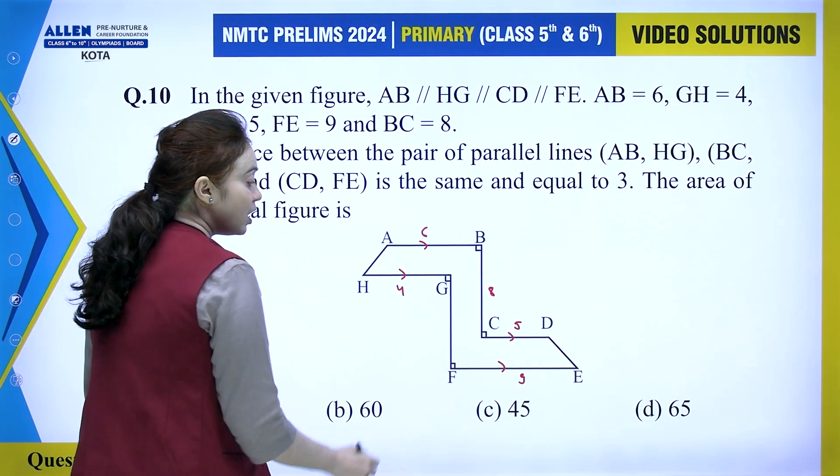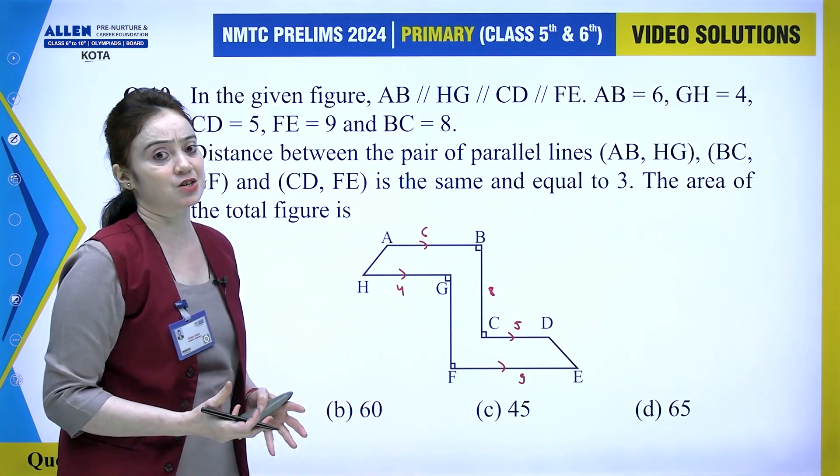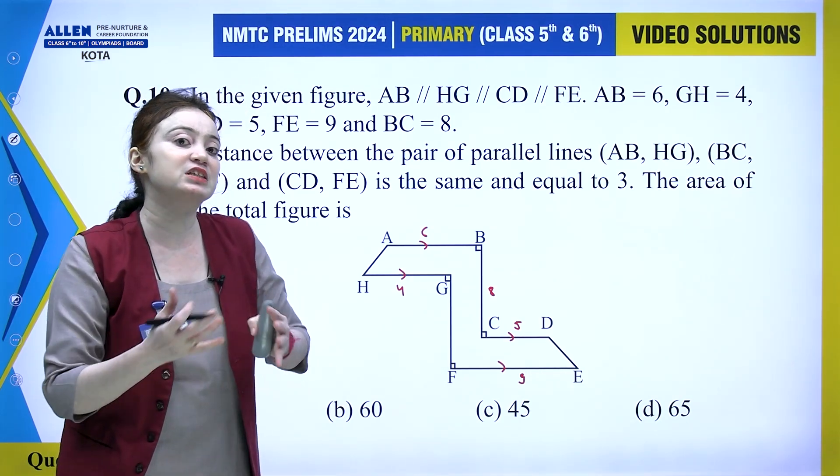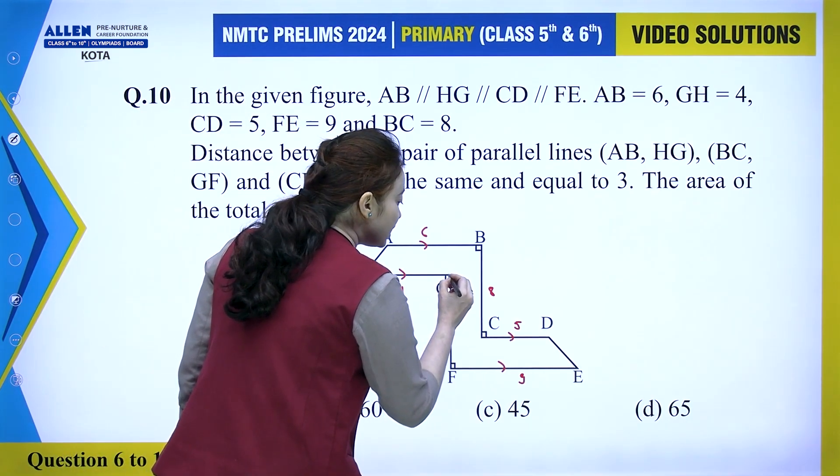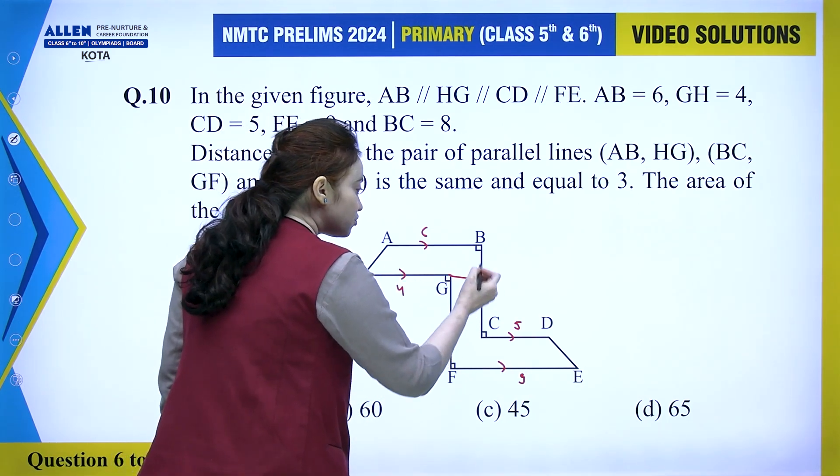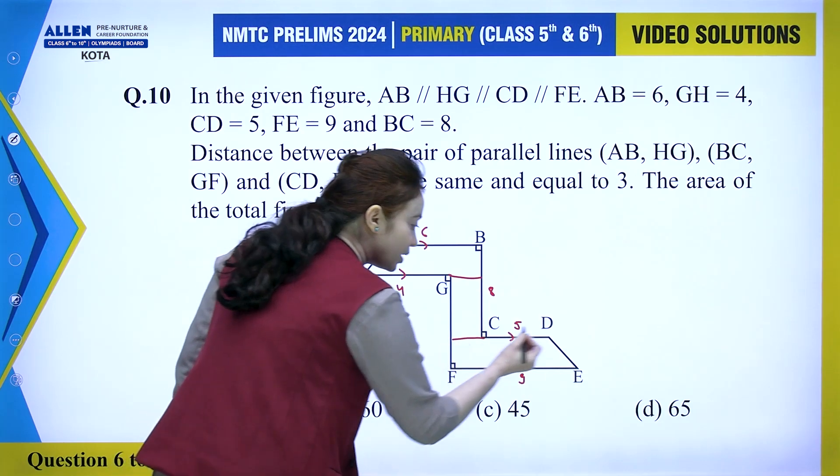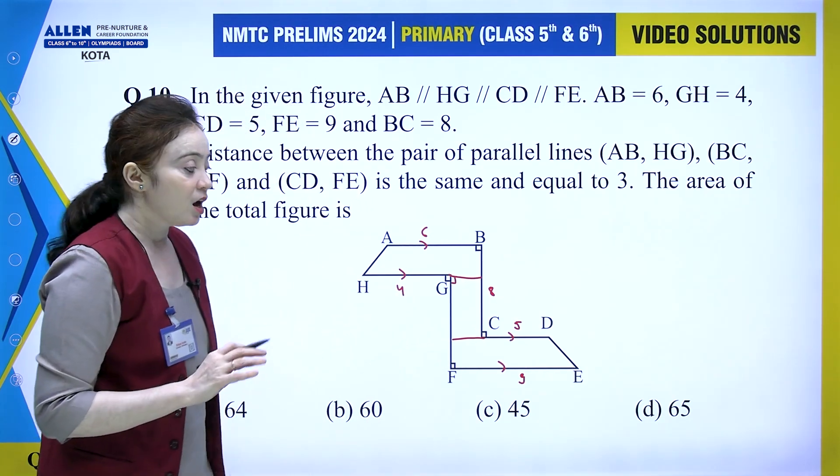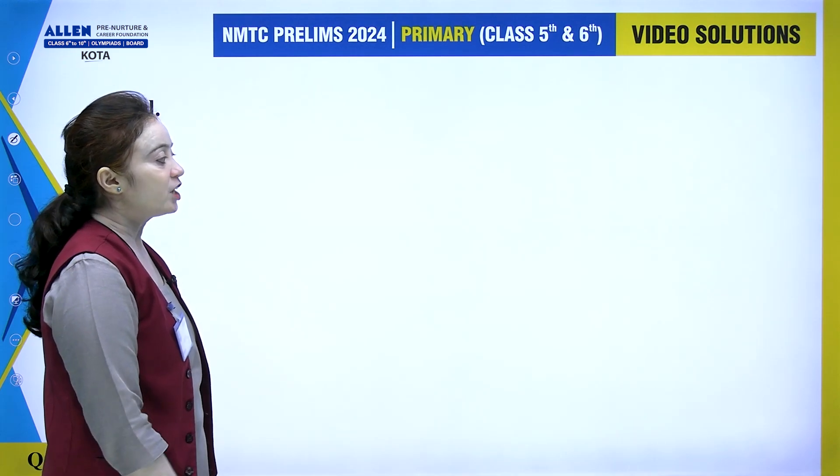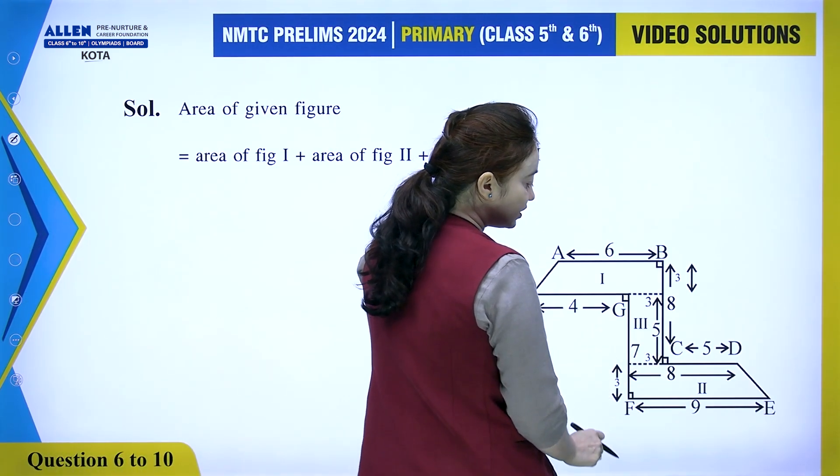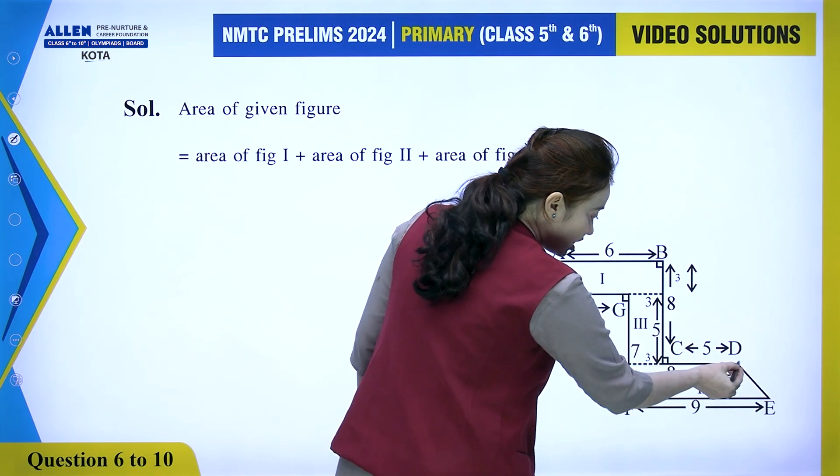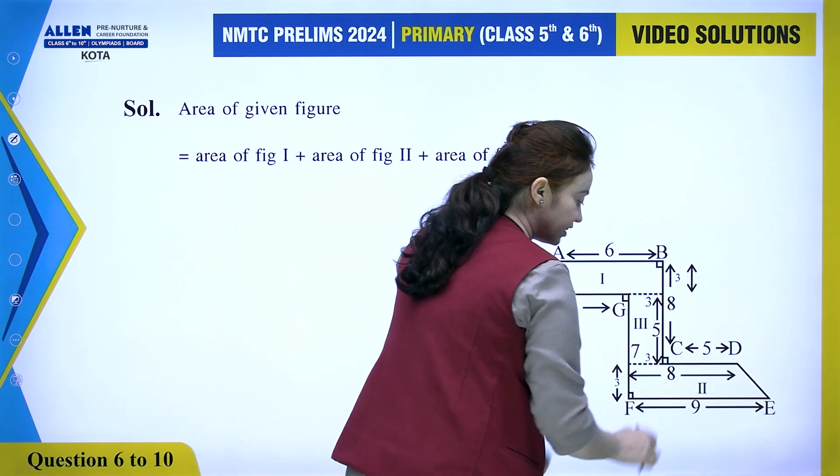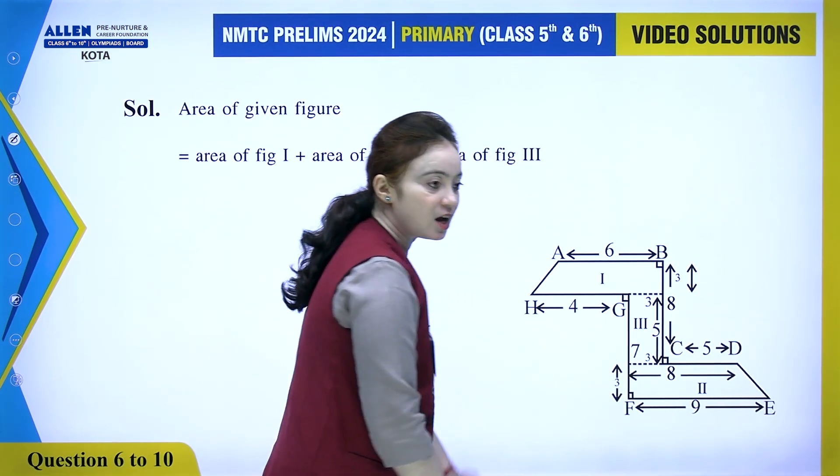For this type of question, our strategy is to divide the given figure into parts whose area we can easily calculate. If I extend this completely, this 3 unit length will form a trapezium shape. Similarly, if we extend this, this will also be a trapezium, and this remaining part will be a rectangle. Now let's understand the measurements.